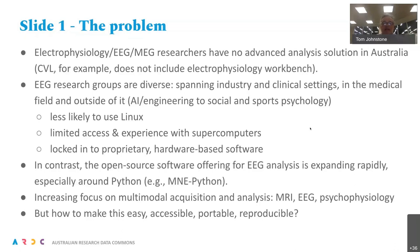Reproducibility is poor because once a software license expires or software only runs on a Windows 95 computer, there's no hope of reproducing analyses. In stark contrast, there is a lot of open source software — not available 10 years ago but now widely available — for analysis of these types of data, largely based on Python and various Python toolboxes, increasingly focused on combining EEG, MEG and electrophysiology data with MRI imaging and peripheral physiology measures. The challenge is providing a powerful, open analysis platform that allows reproducible and shareable analyses but is easy, accessible and portable for people in small labs with few technical resources.